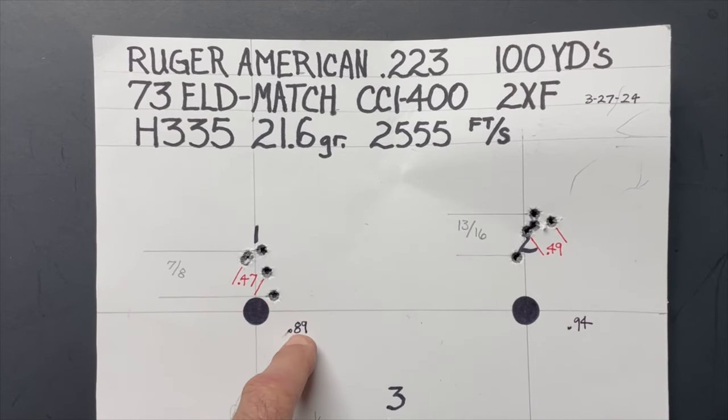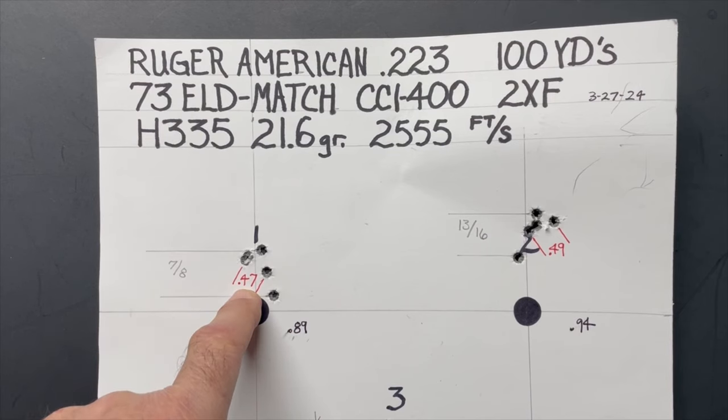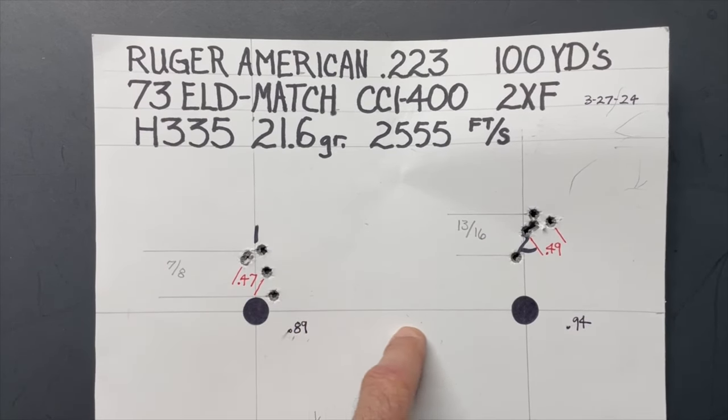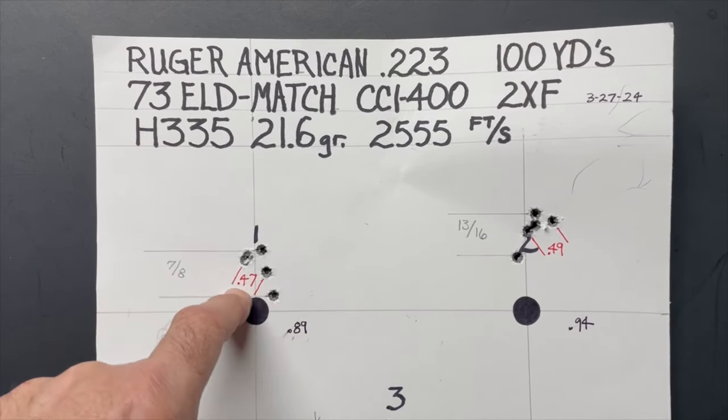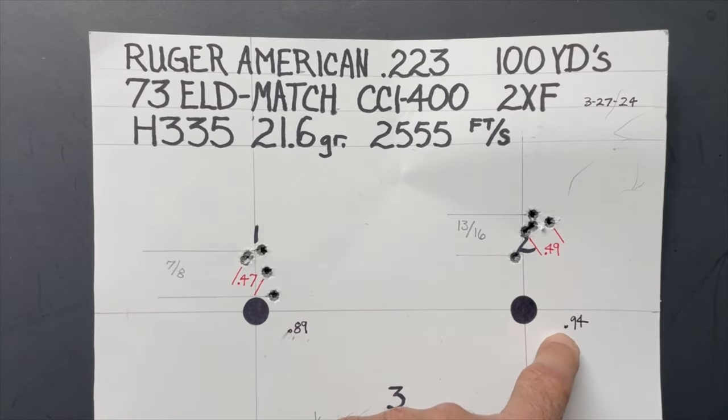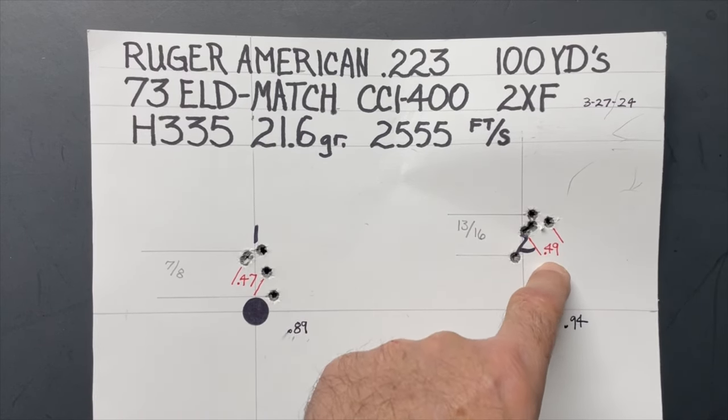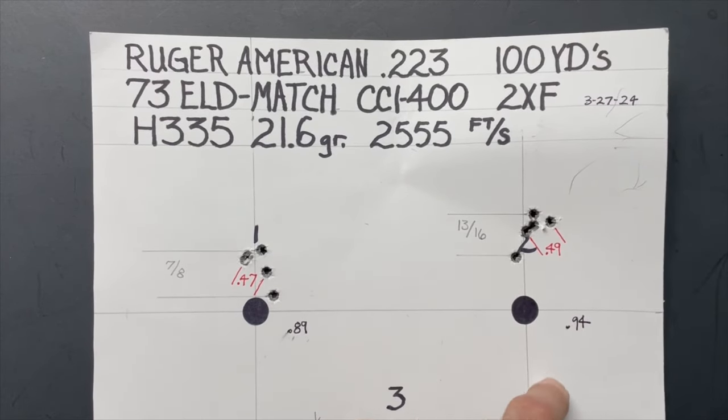Our first group had an extreme spread of 0.89 inches with the best four out of five at 0.47. So inside of an inch and inside of a half inch on the best four out of five, I think that's pretty good shooting. And the second group had an extreme spread of 0.94 with the best four out of five at 0.49. Still good shooting, I think.